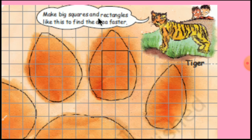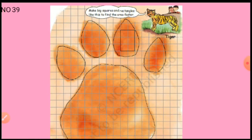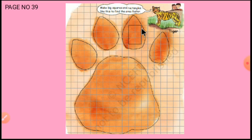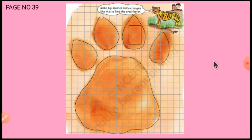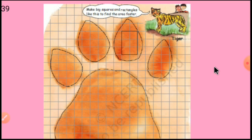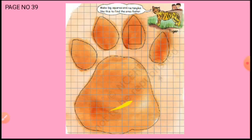Mark big squares and rectangles first to find the area faster. First mark the complete rectangles, then automatically you will know how many complete squares are in that rectangle. After that, find more than half filled squares, then half filled squares. This tip helps you count quickly.